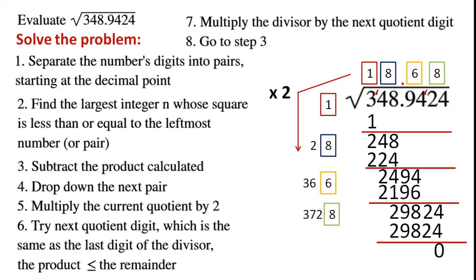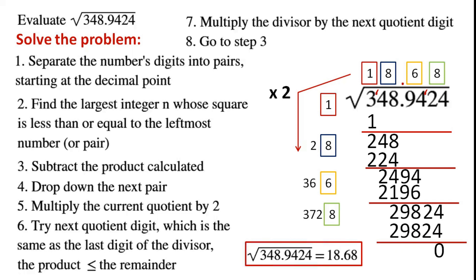Then we go back to step 3. We subtract 29,824 from 29,824 and we have 0. So the square root of 348.9424 is 18.68. Now we have an additional problem: evaluate without a calculator the square root of 600 and 16.5289.